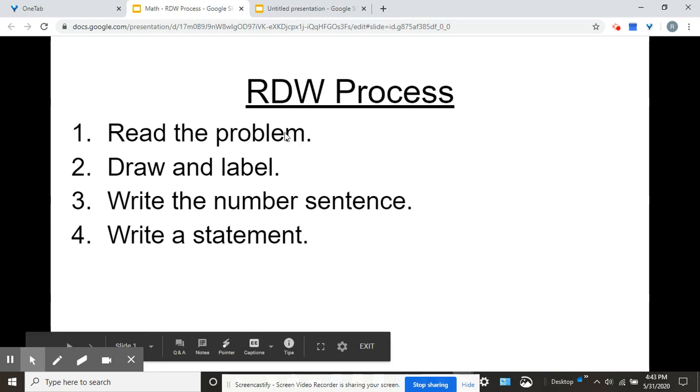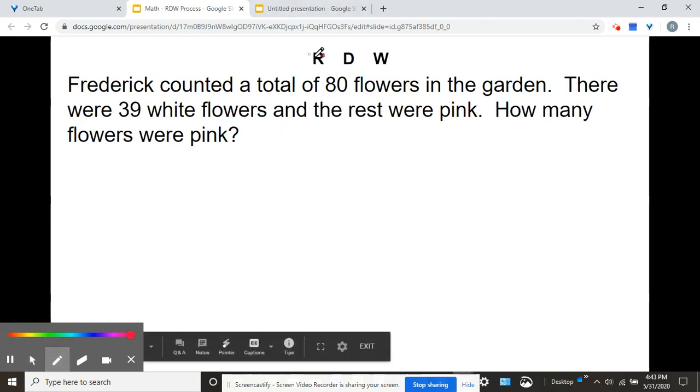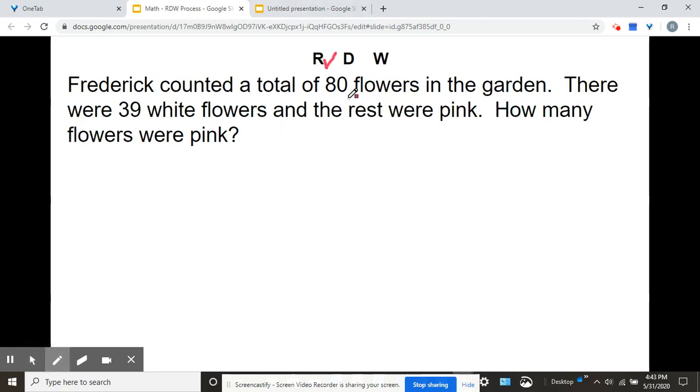So let's use the RDW process to solve this word problem. Okay, read it with me. Frederick counted a total of 80 flowers in the garden. There were 39 white flowers and the rest were pink. How many flowers were pink? Did I read the problem? Yes. So I'm going to put a check mark next to that. That means I read it.